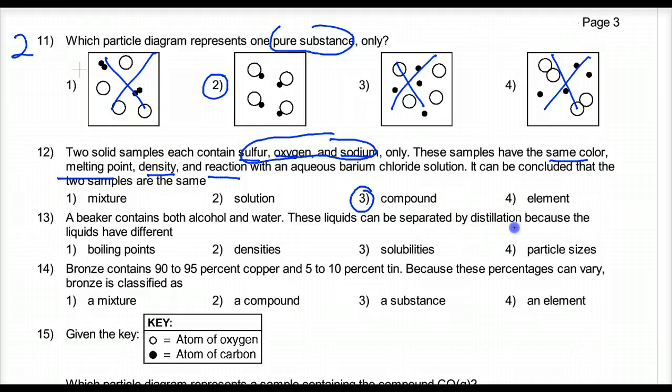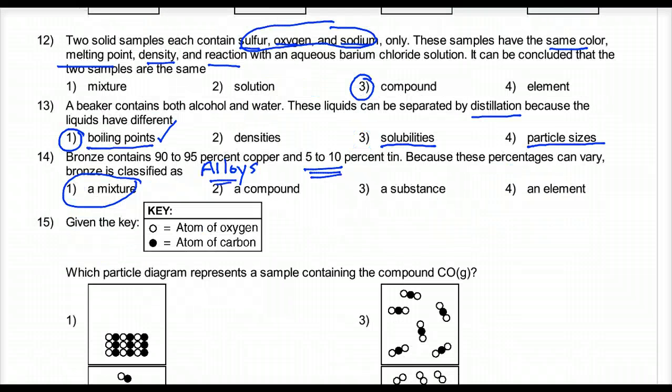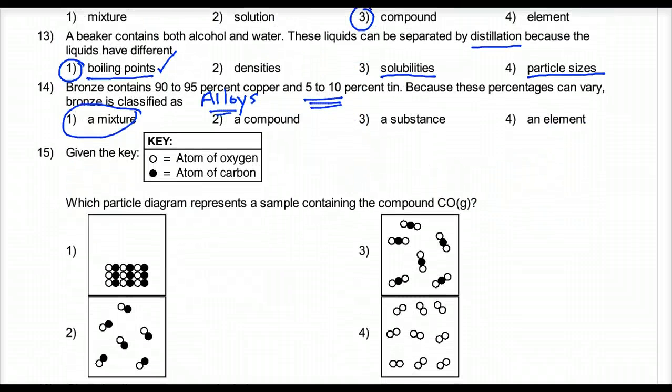A beaker contains both alcohol and water. These liquids can be separated by distillation. That's what we did when we separated the coke because the liquids have different boiling points. We're separating a mixture based on a physical property. Boiling points are physical. Fourteen. Bronze contains 90 to 95% copper and 5 to 10% tin. Because these percentages can vary, bronze is a mixture. Yeah, it's an alloy. Alloys of metals are mixtures. And they can vary. Compounds can't. They have a definite ratio, proportion. It's called a chemical formula.